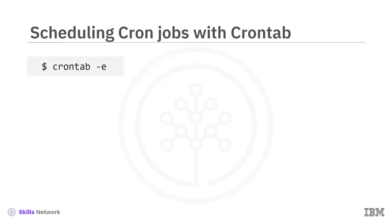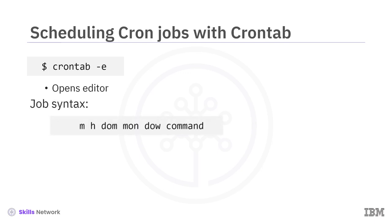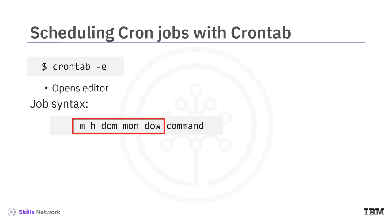Entering 'crontab -e' on the command line opens the default text editor. Using the editor, you can specify a new schedule and a command, which has the following syntax. The command can be any shell command, including a call to a shell script. The five symbols stand for minute, hour, day of month, month, and day of week. All five positions must have either a numeric entry or an asterisk, which is a wildcard symbol that means 'any'.